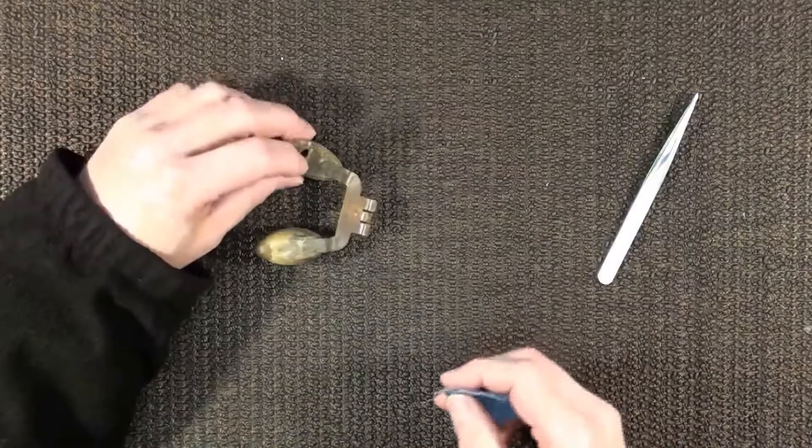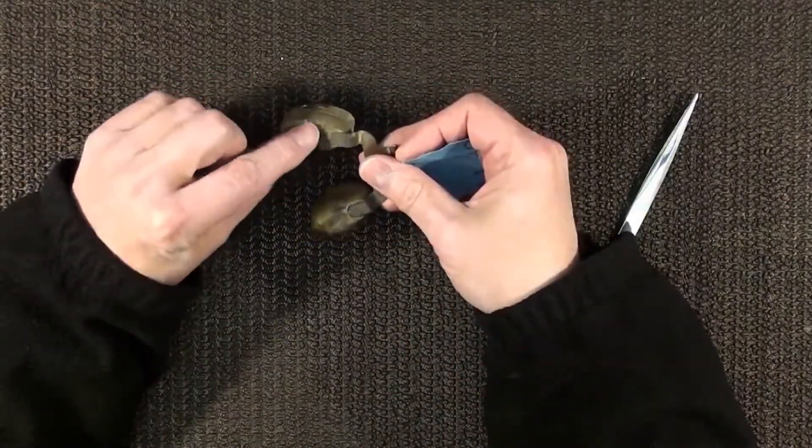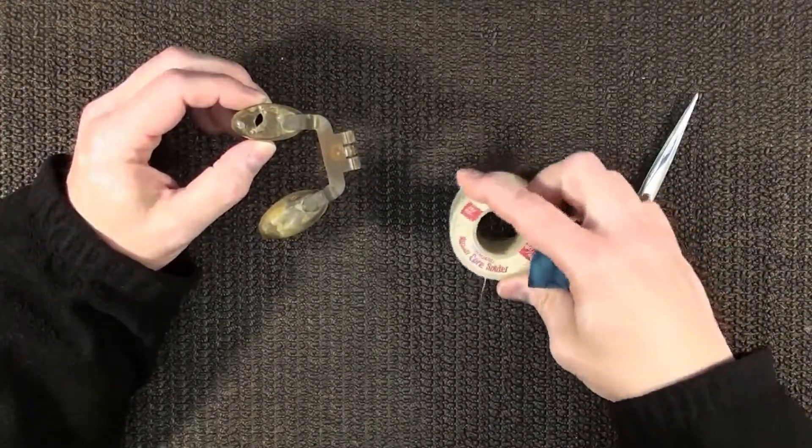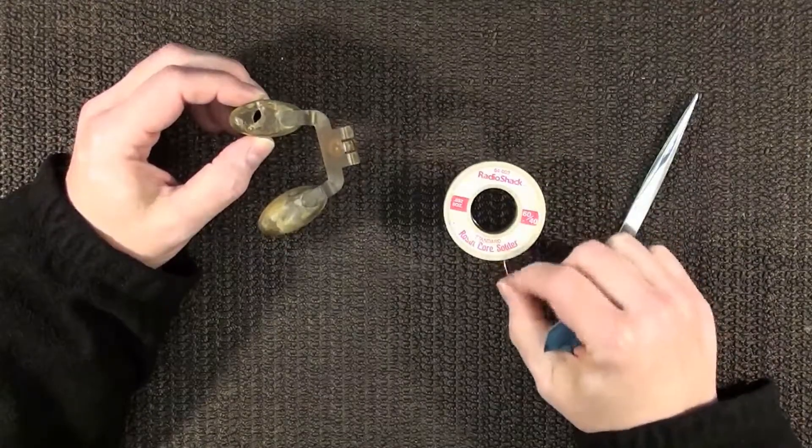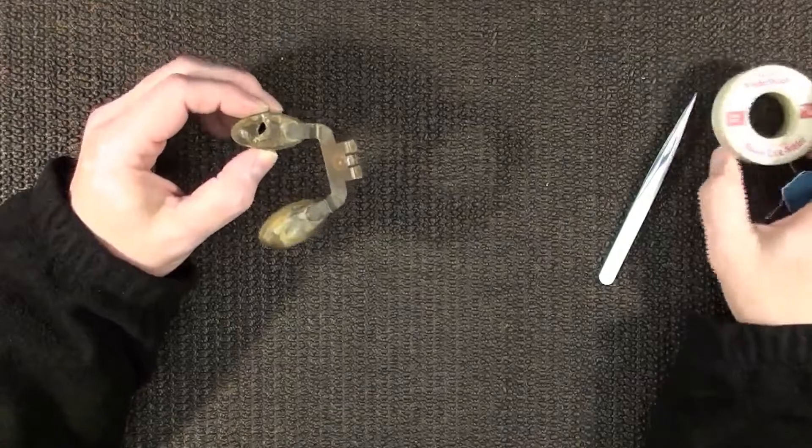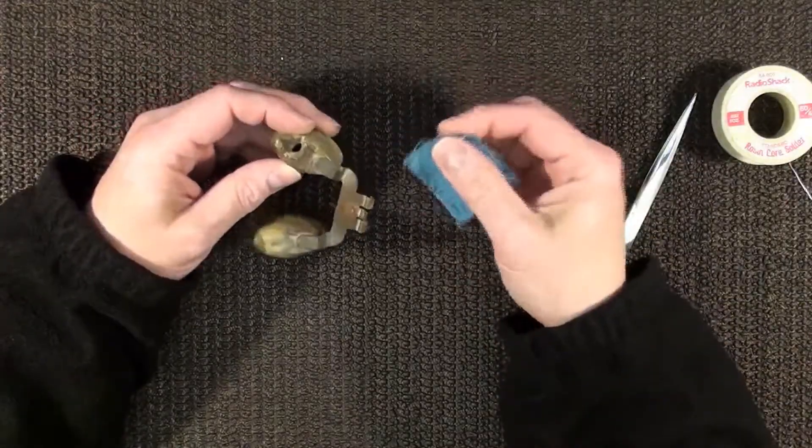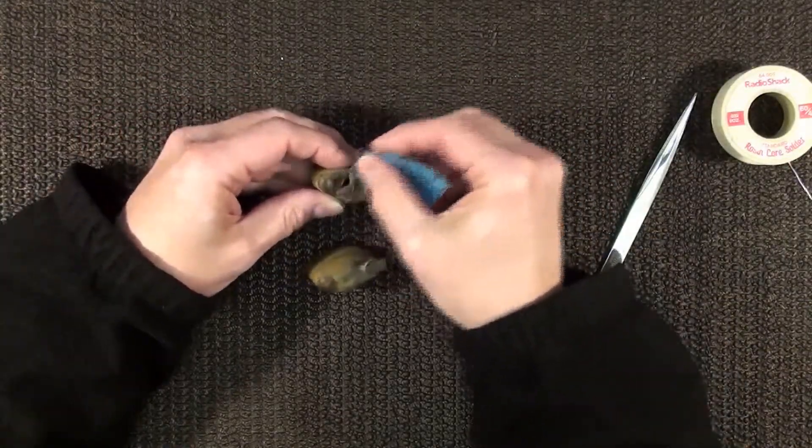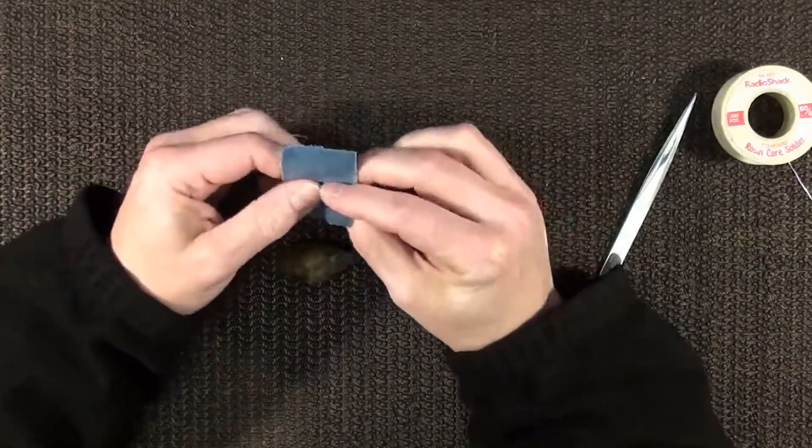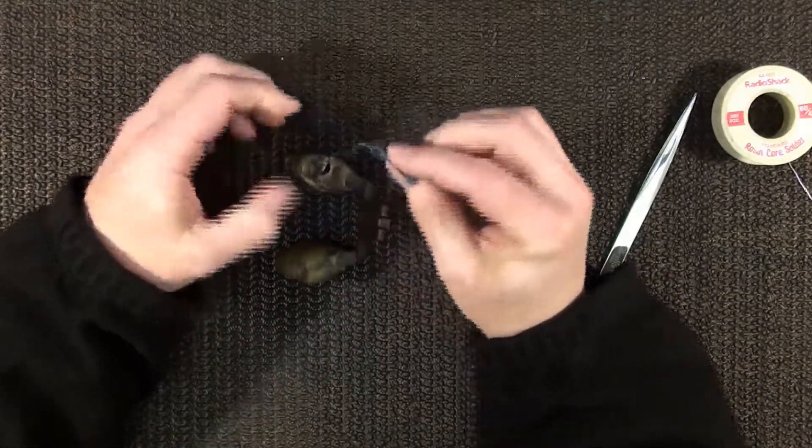First we'll clean up this area so the solder will stick around there. I'm just going to use regular old Radio Shack rosin core solder, standard stuff. Regular soldering iron. I'm going to clean this all up and then we'll go from there. Just got some emery cloth type stuff, really fine.